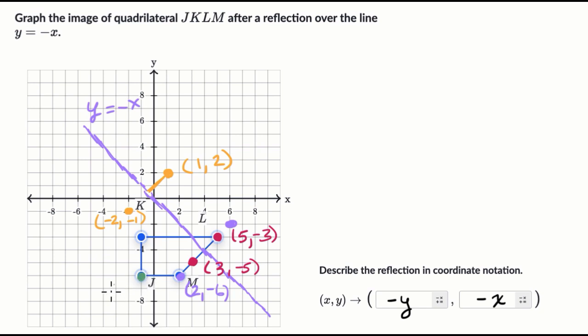This point over here is (-1, -6). Well, I swap them and make them the opposite. So then I go to (6, 1). (6, 1) is going to be right over there. And then last but not least...